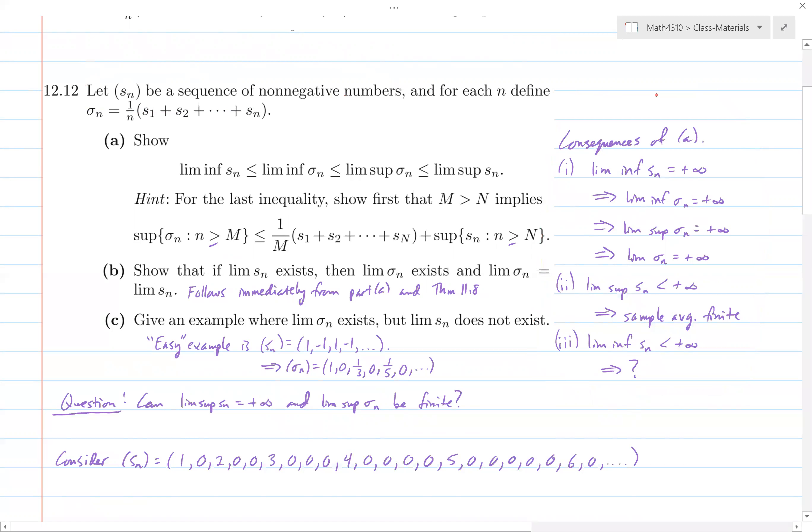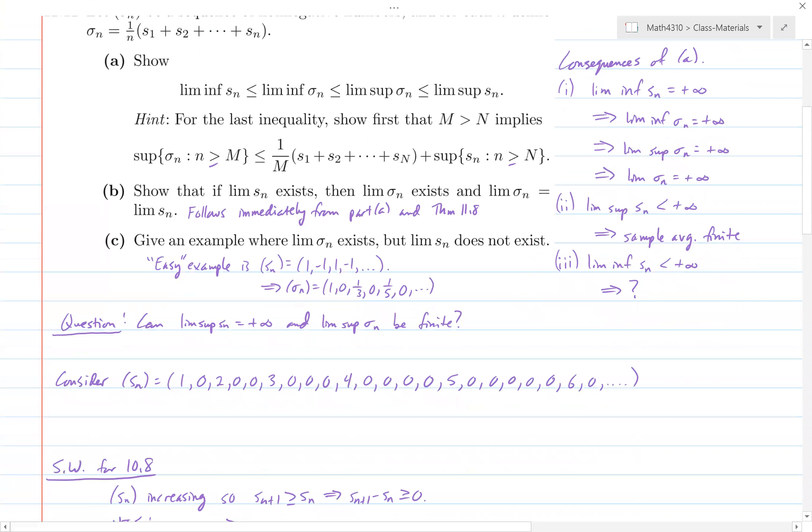And then finally, there's this third consequence that I wrote here, and I left it vague, it's if the lim-inf is less than infinity, the implication is actually not clear. What happens when the lim-inf is finite? So maybe in some sense, this leads to this question that I wrote here, is can we have that the lim-sup is positive infinity, and maybe the lim-inf is finite, and so that the sample averages actually end up having a finite lim-sup.